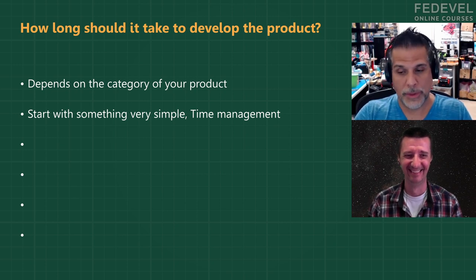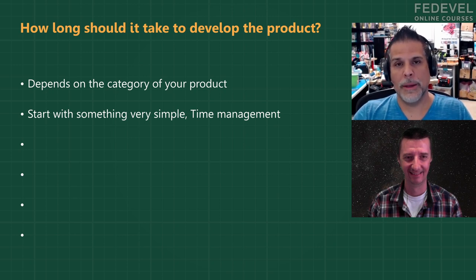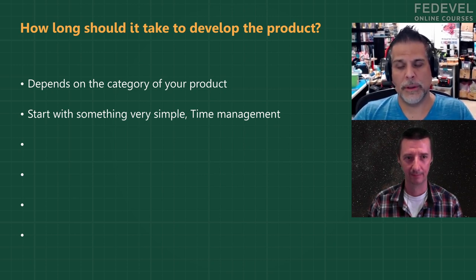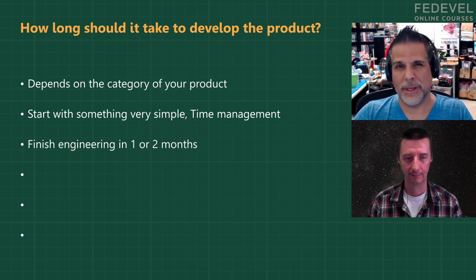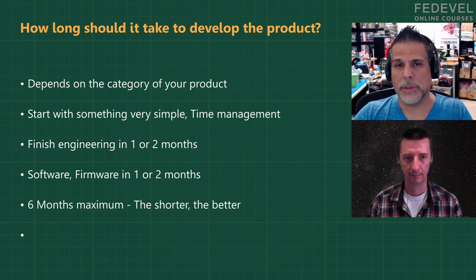Even just shipping an empty box is complicated. You want to do a very simple product. Down the line you might want to make a $20 computer — that's great — but first do something very, very simple where the timeline is: finish all the primary engineering in maybe a month or two, do the software and firmware maybe another month or two, packaging and so forth. So six months is the absolute most, because that's probably going to stretch out to a year.